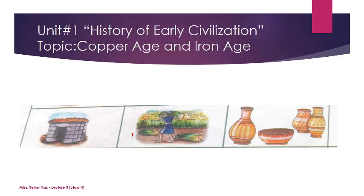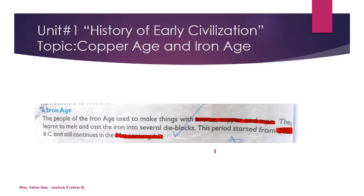In the Iron Age, people used to make things with bronze, copper and iron. In the Iron Age people found three dhats — they had bronze, copper and iron. They started to smelt these dhats; they learned to melt them and cast them into several die blocks. This period started from 2000 BC and still continues into the 21st century AD.